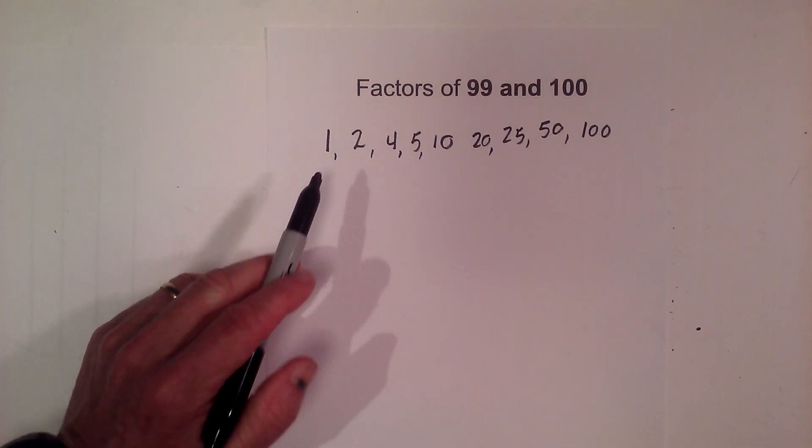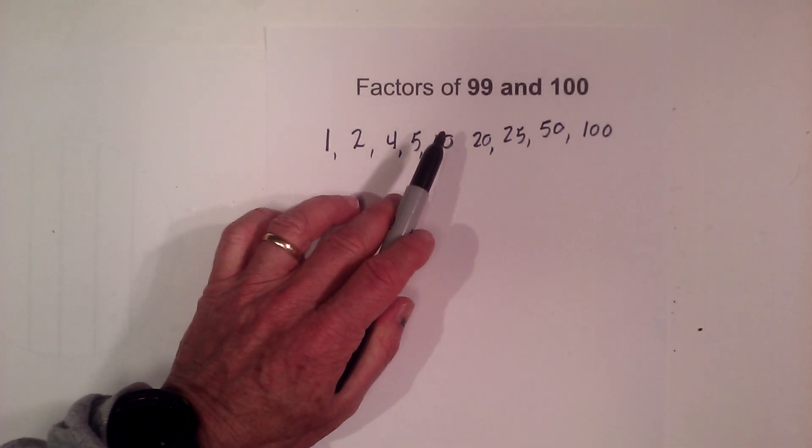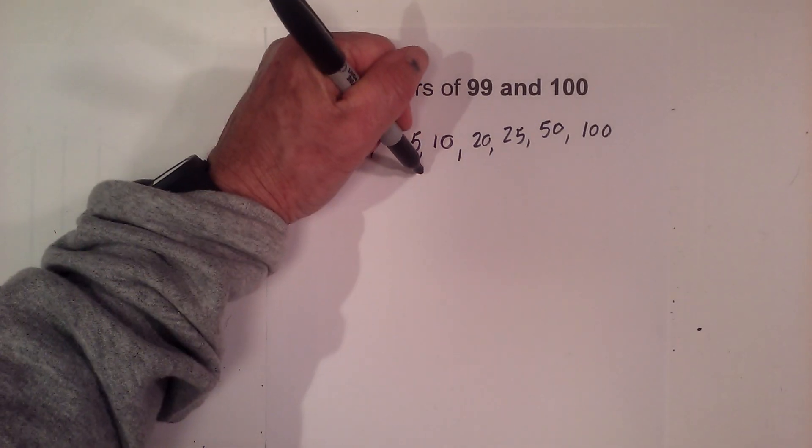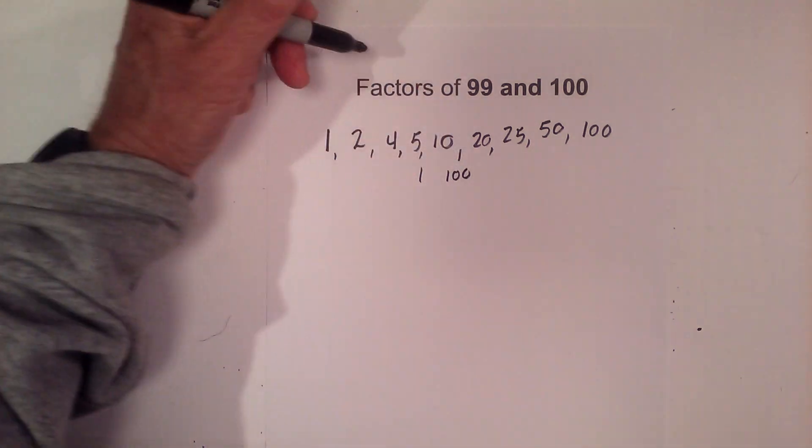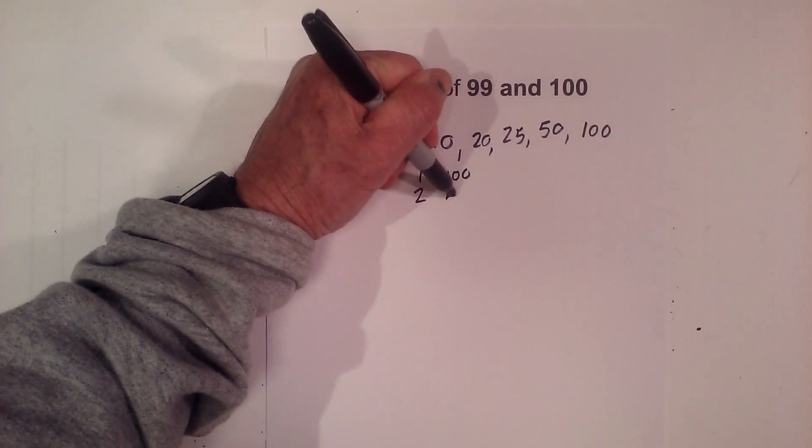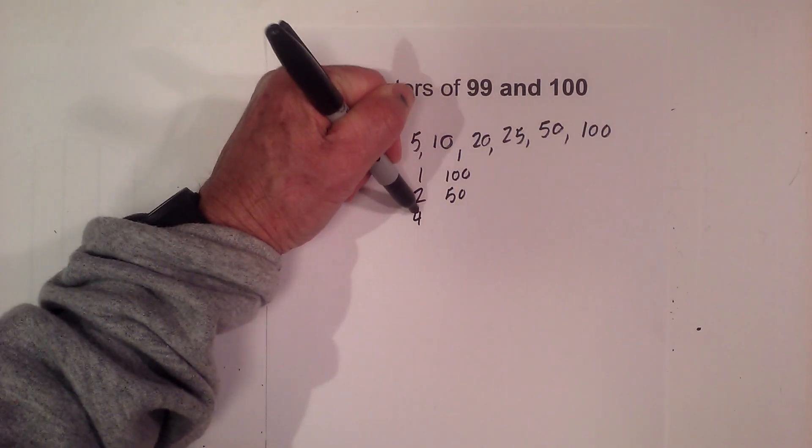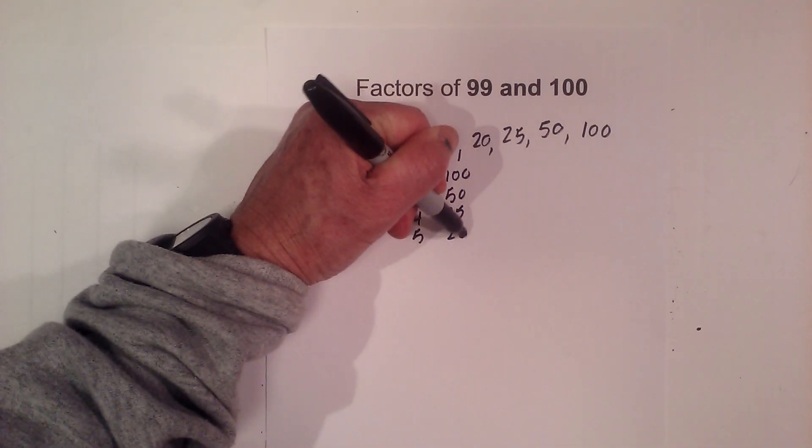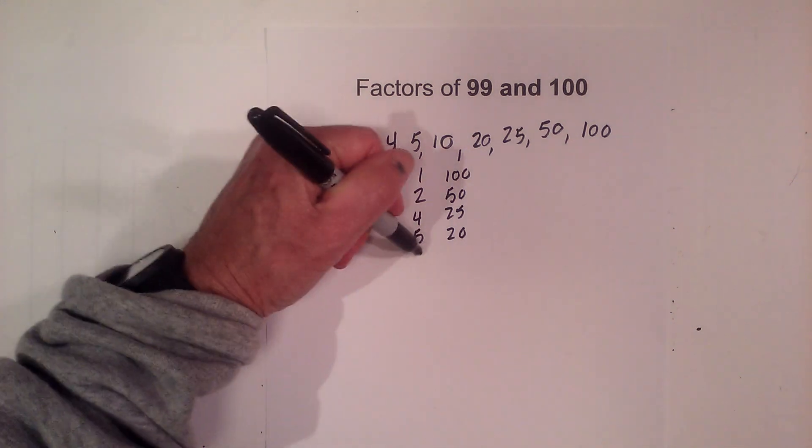So the factors of 100 are 1, 2, 4, 5, 10, 20, 25, 50, and 100. And if you'd like to know the pairs: 1 times 100, 2 times 50, 4 times 25, 5 times 20, and then 10 obviously is 10 times 10.